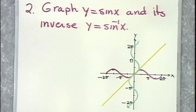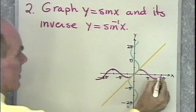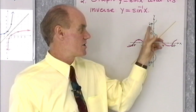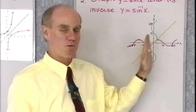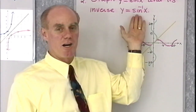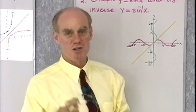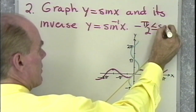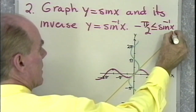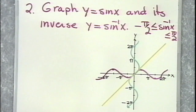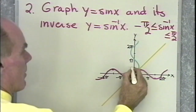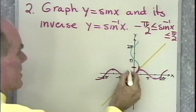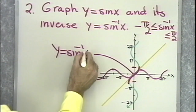Now you see the two graphs have symmetry about the line y equal x. This graph that I've drawn right here is the graph of y equal inverse sine x with no restrictions on it. And you can see that it's not the graph of a function because we can find vertical lines that cross this graph in more than one spot. Since we want our inverse sine equation to be the equation of a function, we put the restriction that negative pi over 2 is less than or equal to inverse sine x, which is less than or equal to pi over 2. So just this little part right here is the graph of y equal the inverse sine function of x.